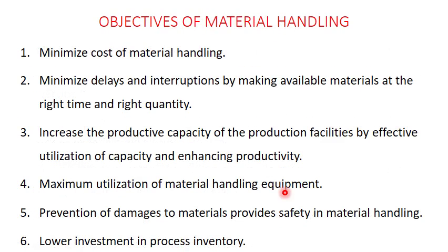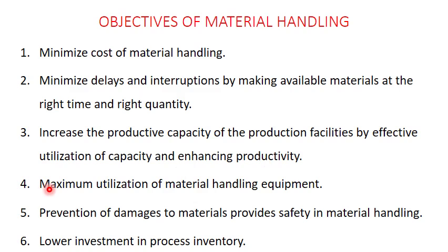Coming to the objectives of material handling. The first objective is to minimize the material handling cost, which ultimately reduces the total cost of production. The second is to minimize delays, the time taken by production or cycle time, and interruptions — by making materials available at the right time and in the right quantity. The third is to increase the productive capacity of production facilities by effective utilization of capacity and enhancing productivity.